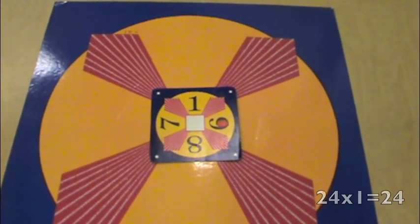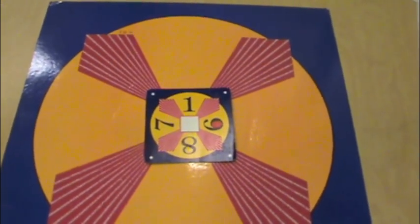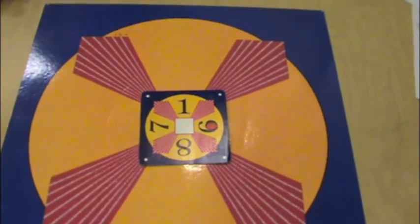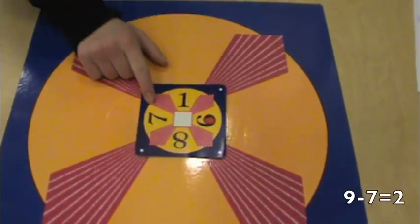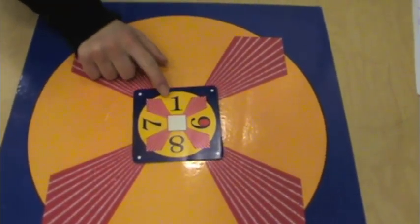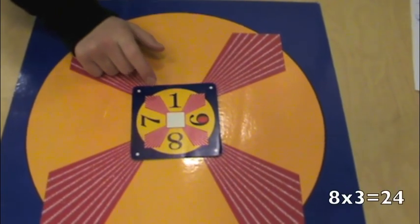This is just one way to solve this card. Most cards have several ways that they can be solved. 9 minus 7 equals 2. 2 plus 1 equals 3. 8 times 3 equals 24.